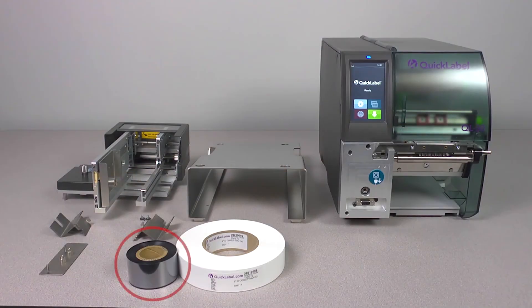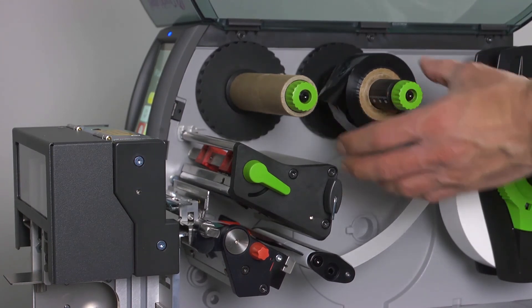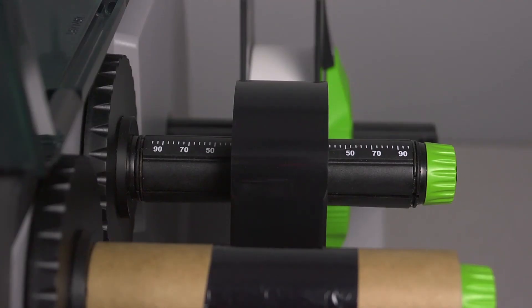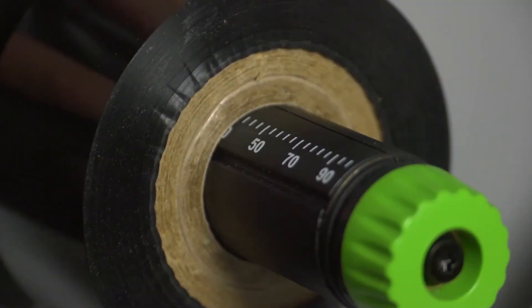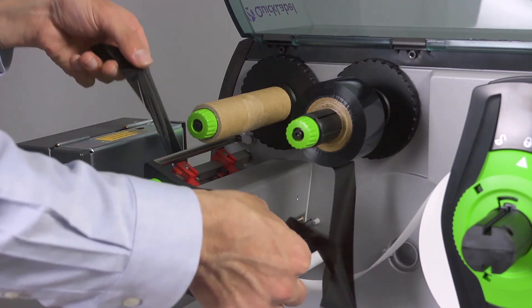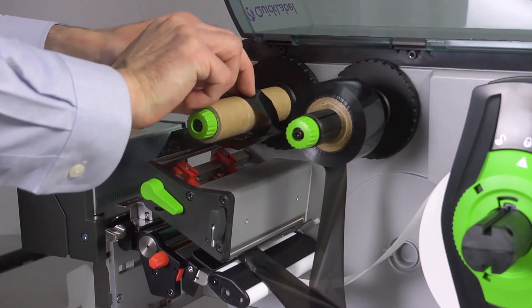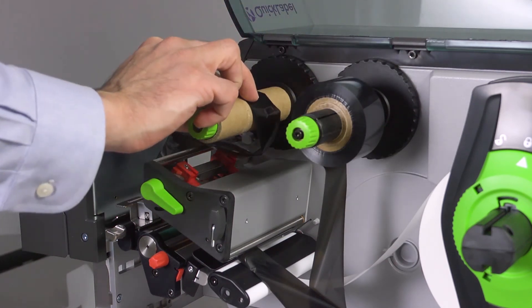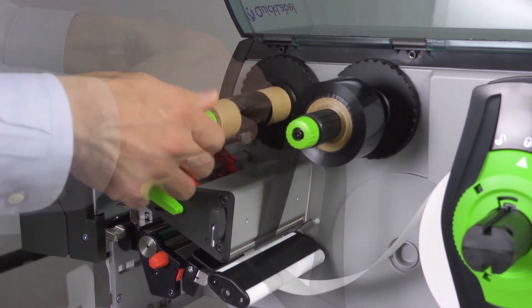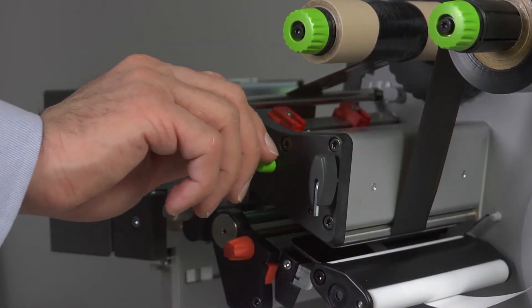Now you can load the ribbon. Load the ribbon onto the ribbon holder. The ribbon roll should be placed in the center of the ribbon holder according to the measurements printed on it. Feed the ribbon through the printer and tighten it. Close the print head.